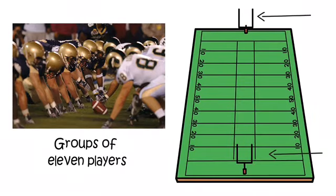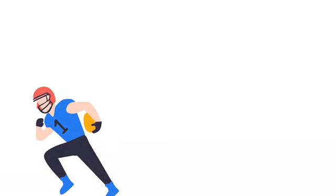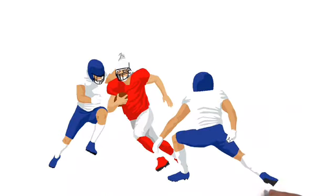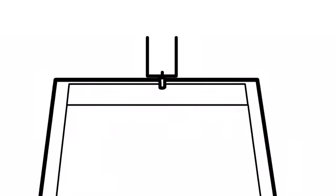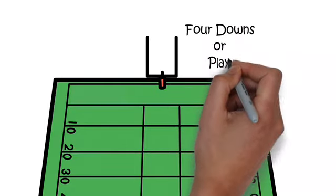The offense, the team with possession of the oval-shaped football, attempts to advance down the field by running with the ball or passing it, while the defense, the team without possession of the ball, aims to stop the offense's advancement and take the ball for themselves. The offense must advance at least 10 yards in four downs or plays.